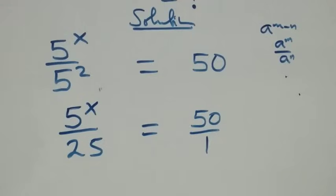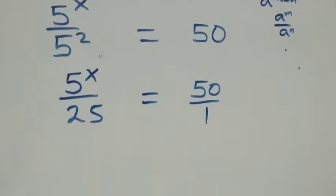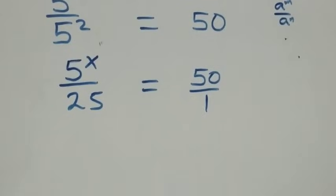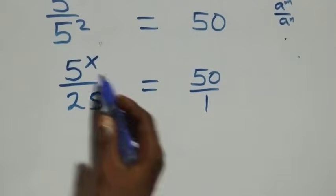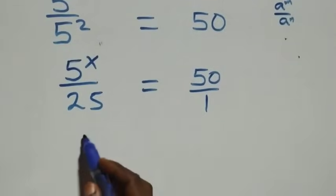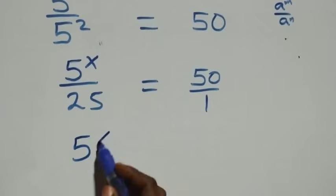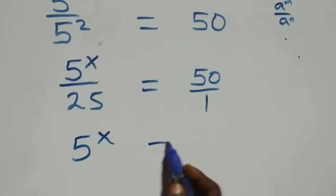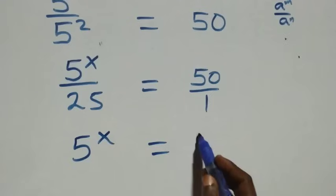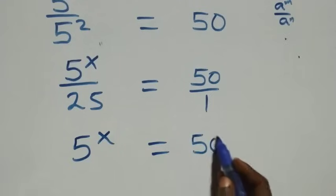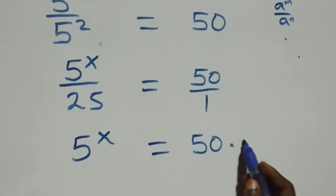Next step, we cross-multiply: 5 raised to power x times 1 is the same thing as 5 raised to power x, then equals to 50 times 25.